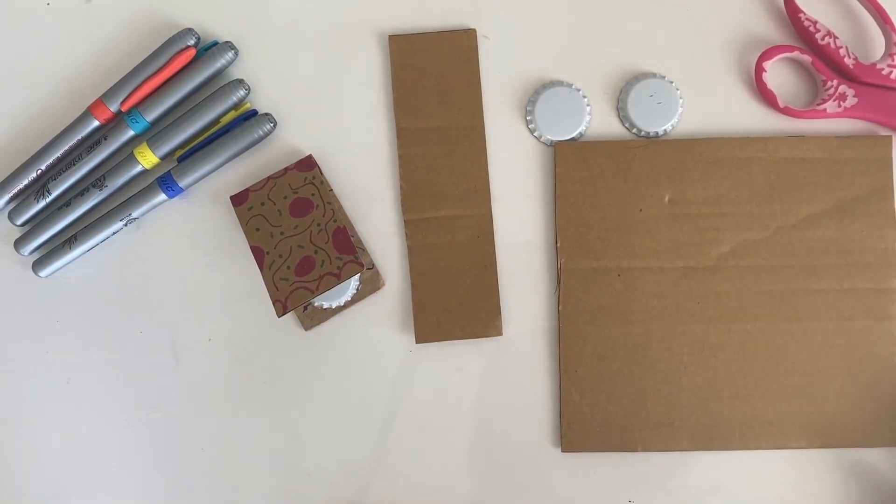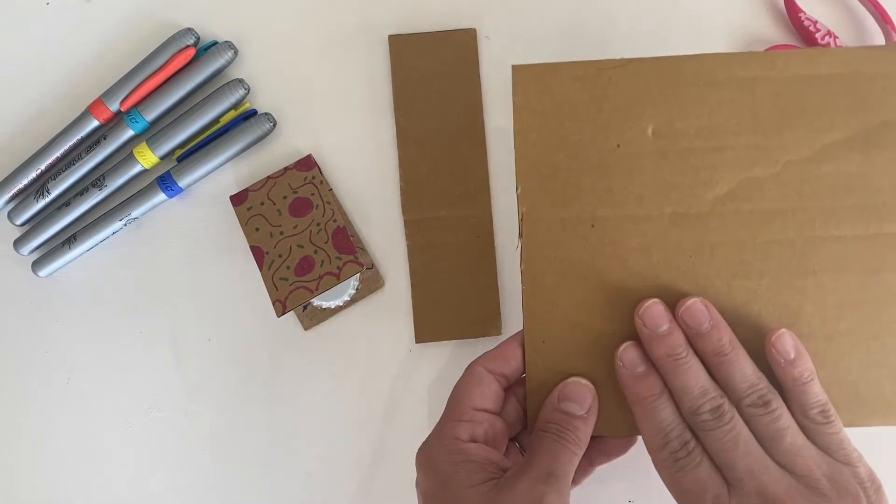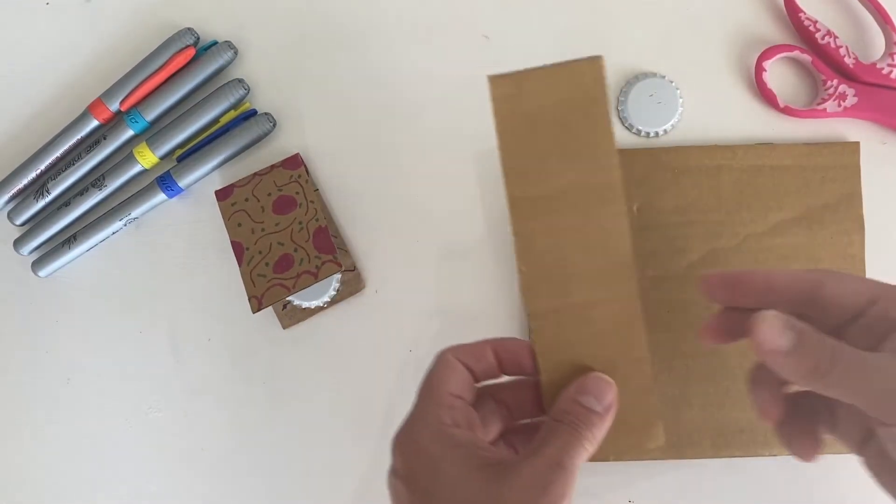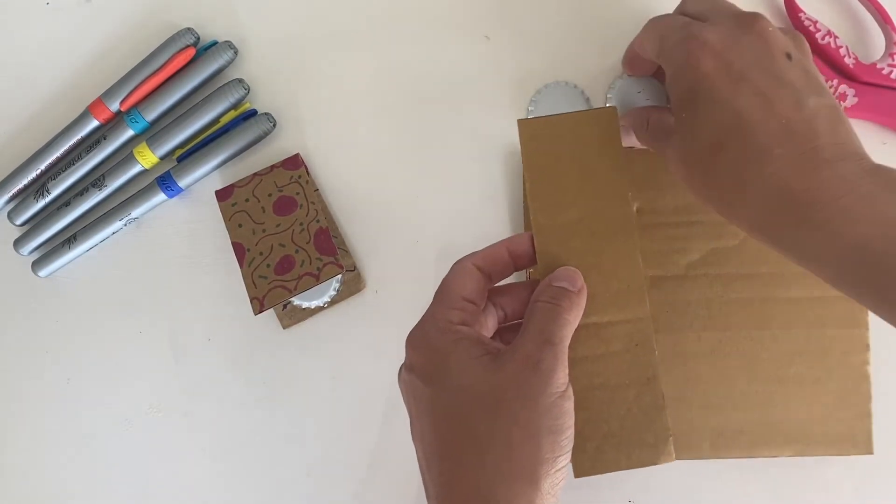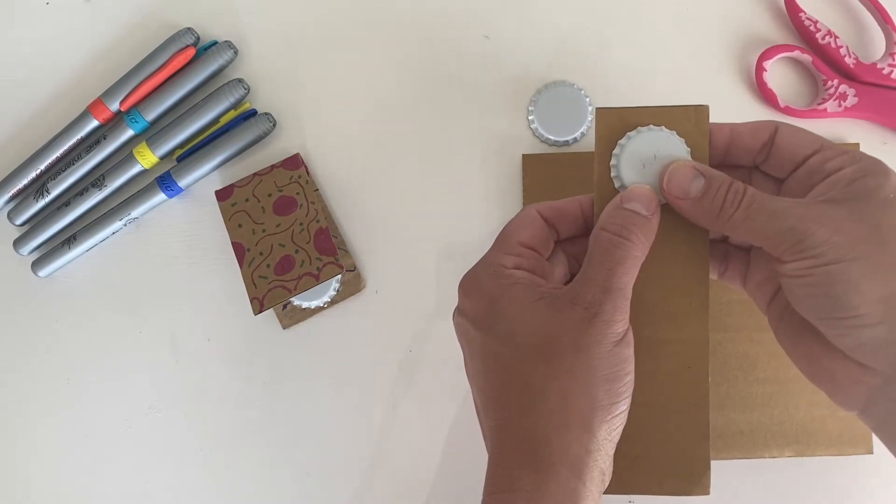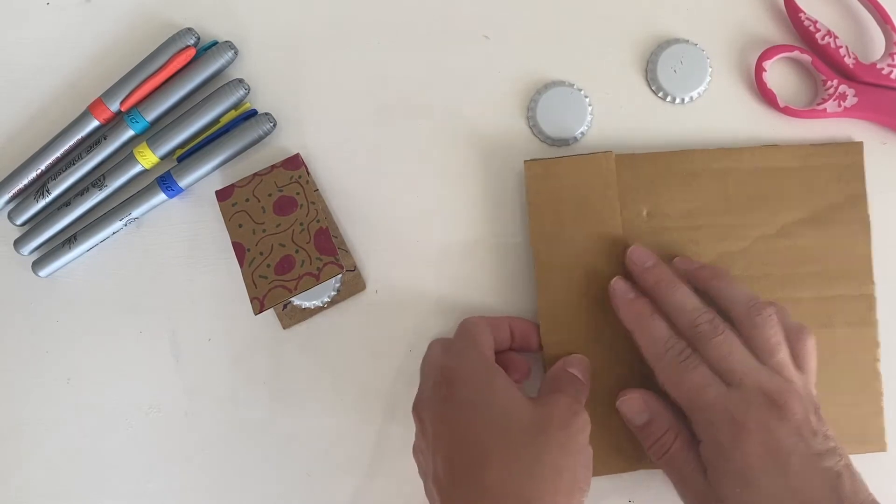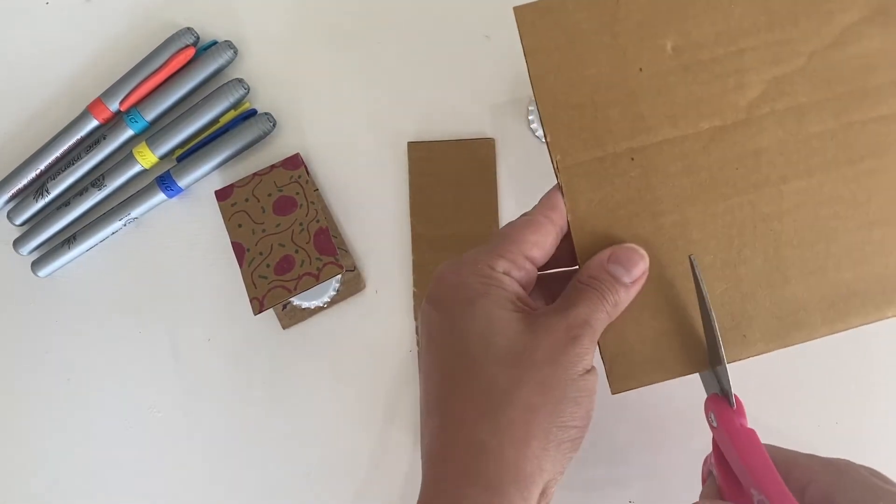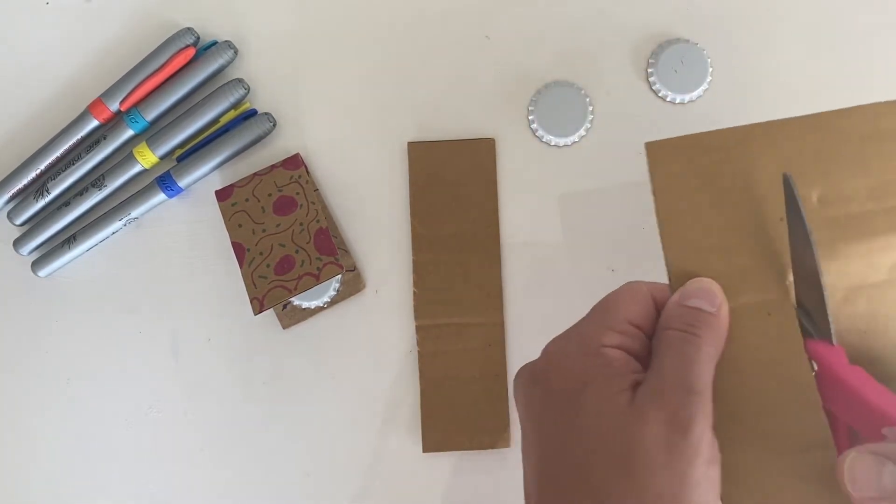Once you have all your materials selected, you are going to be starting with some cardboard. Take your cardboard and cut a strip. Any length will do, but you want it to be the width that fits a bottle cap. Find that width and then you are going to simply cut it straight out of your cardboard. Cut a straight line all the way down.